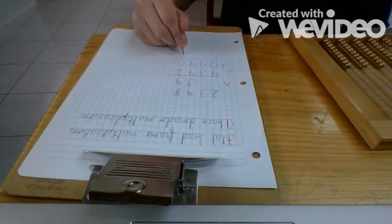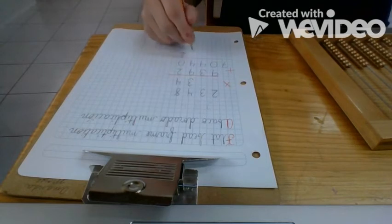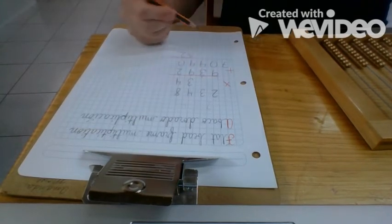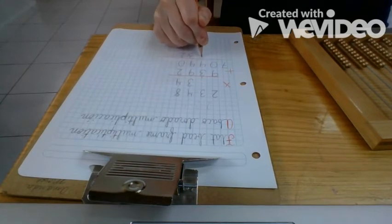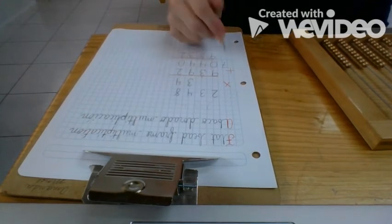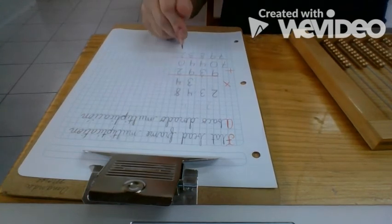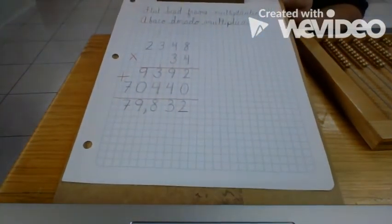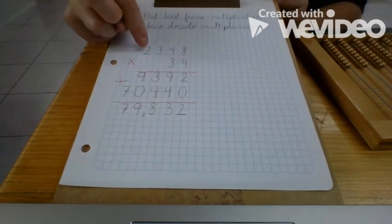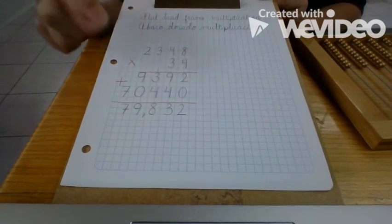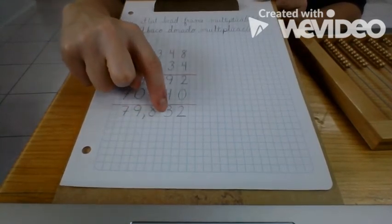Two plus zero gives me two. Nine plus four gives me 13 — carry over my one. Three plus four is seven, plus one is eight. Nine plus zero is nine, and zero plus seven is seven. So now I've added up my partial products and I have my final product: two thousand three hundred forty-eight multiplied by 34 gives me a final product of seventy-nine thousand eight hundred thirty-two.